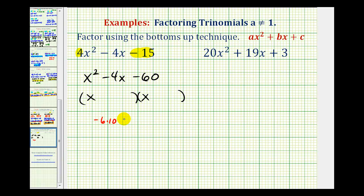Well, negative six times ten is equal to negative sixty, but negative six plus ten is equal to positive four. We want negative four.